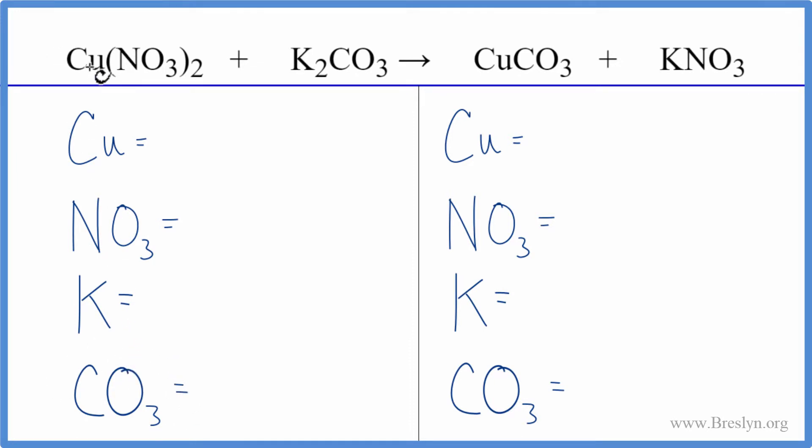So let's try this. We have one copper. We have one nitrate times two, so we have two nitrates, two potassium atoms, and then the one carbonate.